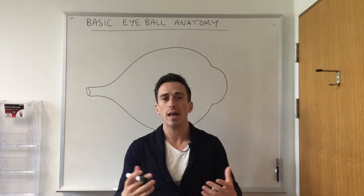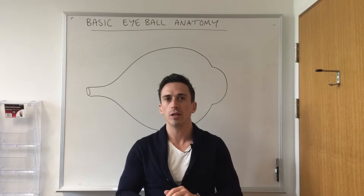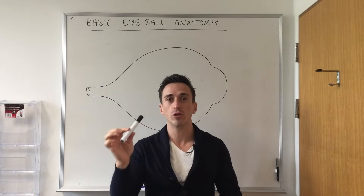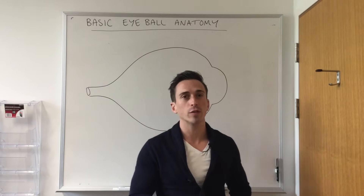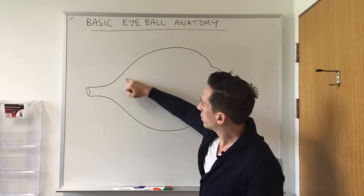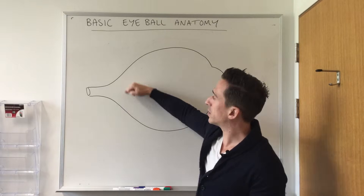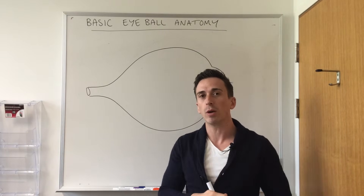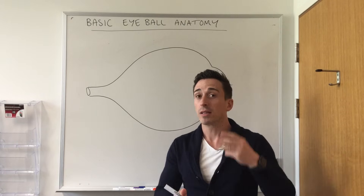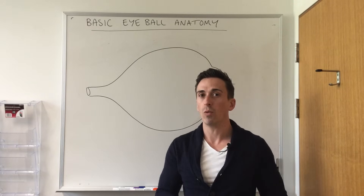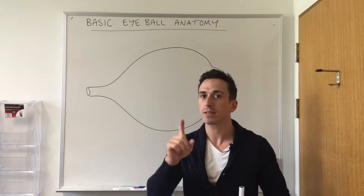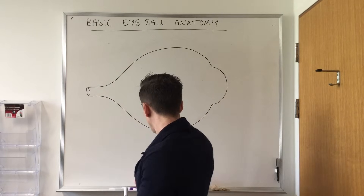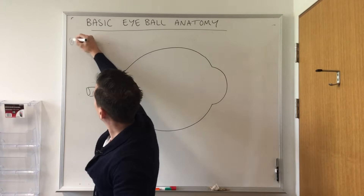Let's take a look at the basic anatomy and a little bit of physiology of the eyeball. The reason we have an eye is so that we can produce a good picture on the surface of our retina, which takes up predominantly the posterior portion of the eyeball. When we look at the eye anatomically, there are three main layers that we need to be aware of.